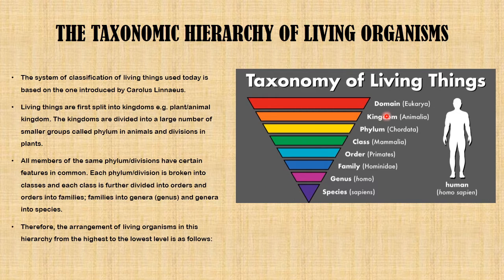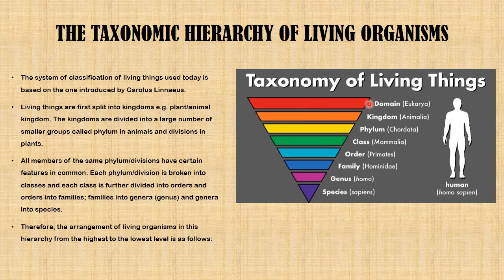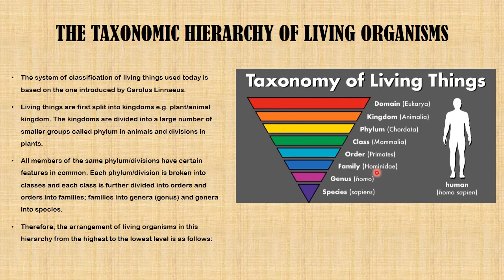For human beings, who have the scientific name Homo sapiens, we can distinguish them through the hierarchy. Man falls under the domain Eukaryia, kingdom Animalia, phylum Chordata, class Mammalia, order Primates, family Hominidae, genus Homo, and species sapiens — that is why man has the scientific name Homo sapiens.